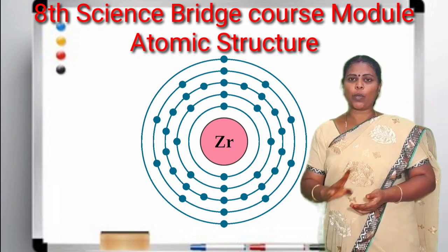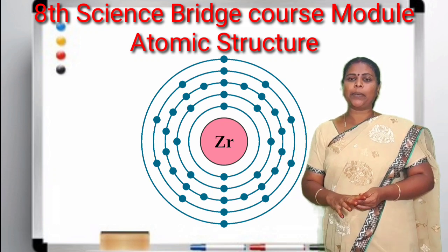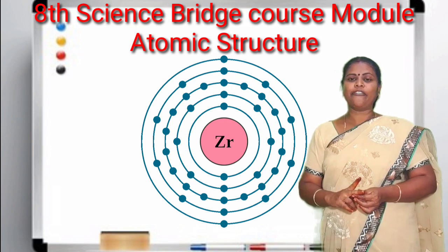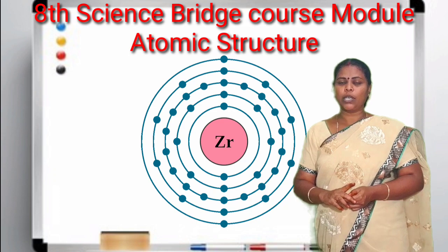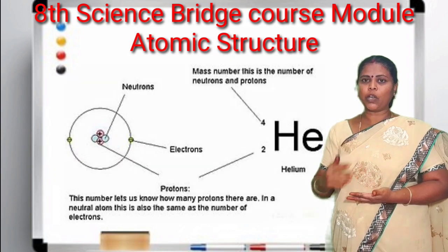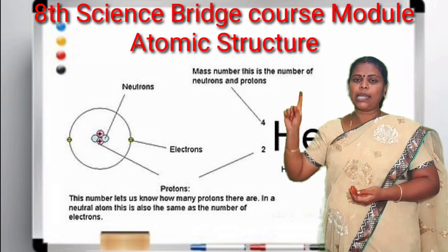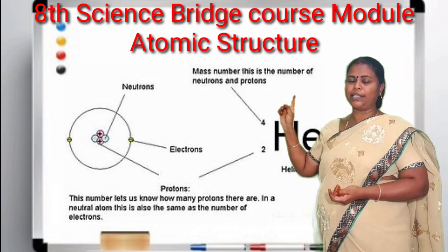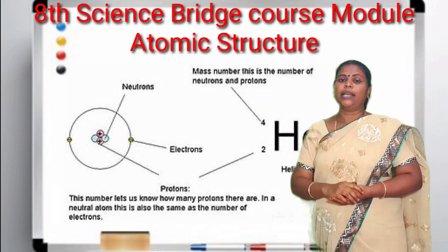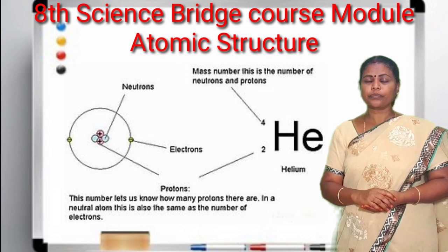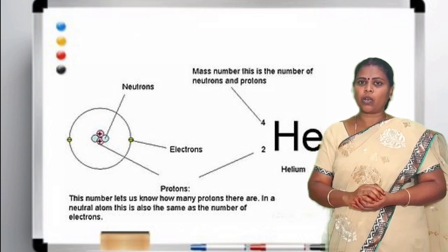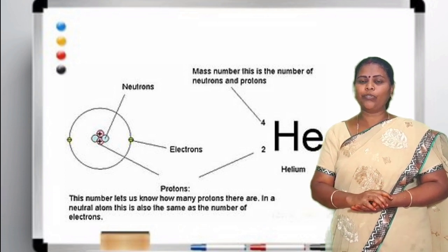The S subshell can accommodate 2 electrons, whereas P can accommodate 6 electrons, D can accommodate 10 electrons, and F can accommodate 14 electrons. Atomic number is nothing but the number of protons which is present in the nucleus, or the number of electrons revolving around in the electrical orbit. The number of protons and the number of electrons is similar — both will be the same.